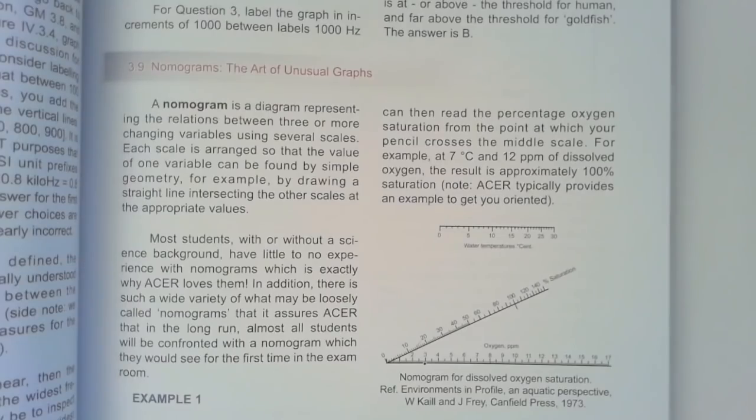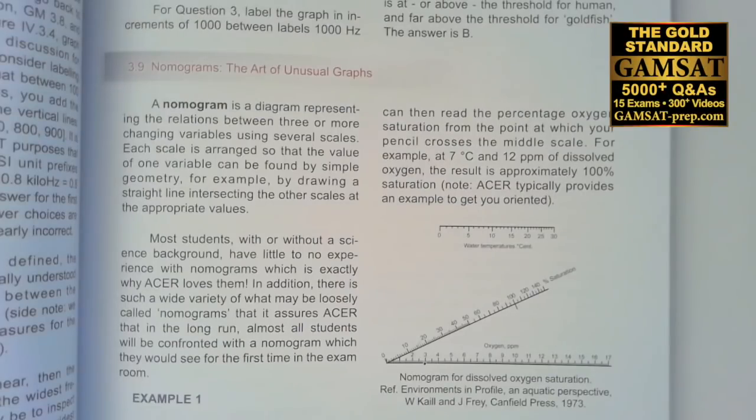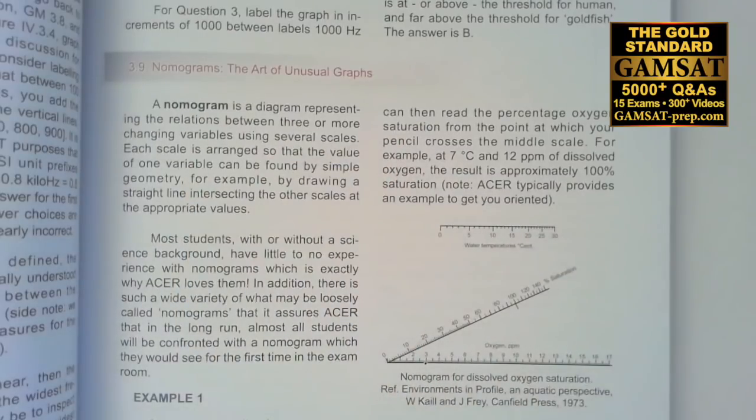Questions 14 to 17 and the introduction has to be to nomograms. Nomograms are unusual graphs. These are graphs that usually have three or more variables, and so in our new gold standard GAMSAT book, this is book two, in the math section chapters we added a whole new section on nomograms, the art of unusual graphs.